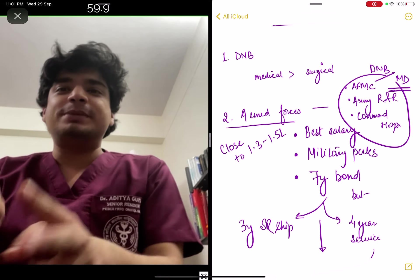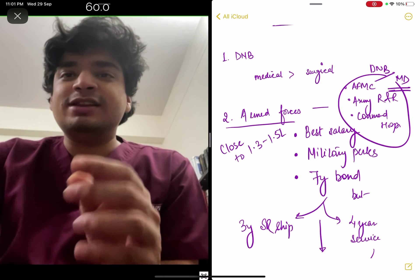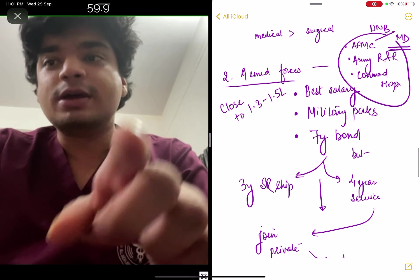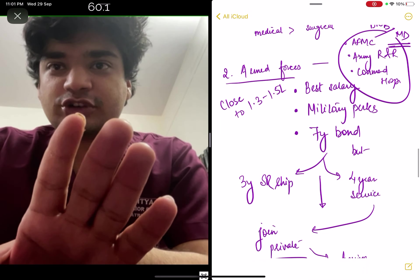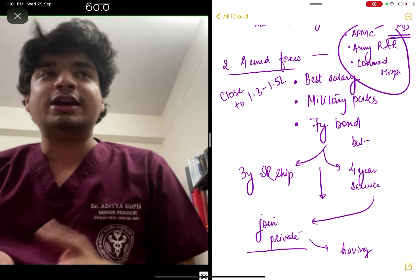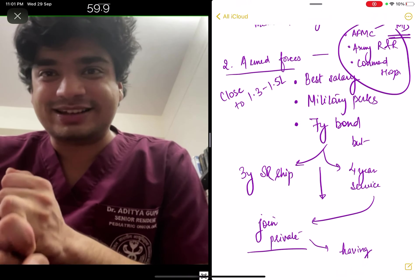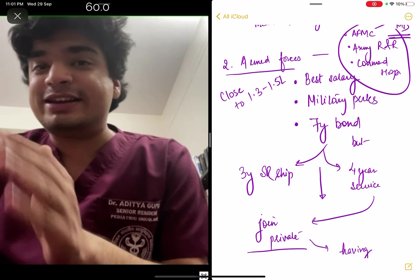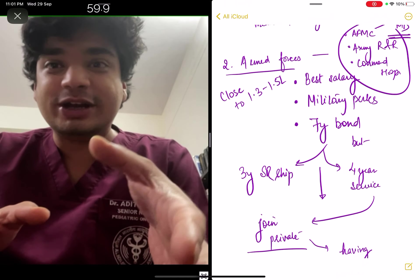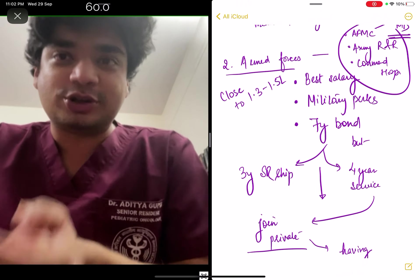Now most people will complain about just two things. First is the bond, the 7-year bond. Let me be very clear, don't think of the 7-year bond as 7-year bond, think of it as just a 4-year bond, because you had to do a 3-year SR-ship anyway, so that is gone. And this 4-year is just your experience. If you do DNB in Pediatrics, you got 3 years of SR-ship, that is experience. Plus your salary will keep on increasing because you will keep on getting promotions, you will have all the military perks, and you will have 4 years of experience in working in the best hospitals of this country.